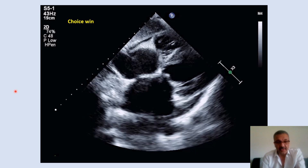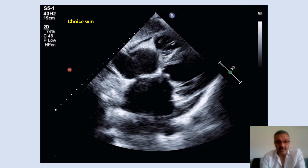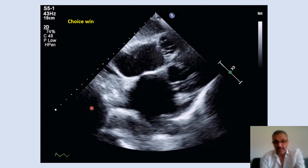The window choice for detecting pericardial effusion is generally subcostal, because you have the liver as a window and it helps you get a clearer image. But many patients don't have a good subcostal window, and based on gravity, position of the patient, and the amount of fluid, we don't satisfy only with subcostal detection. We always go and detect all other windows.